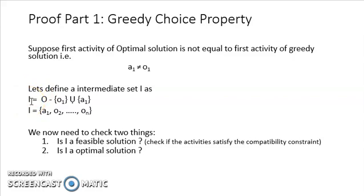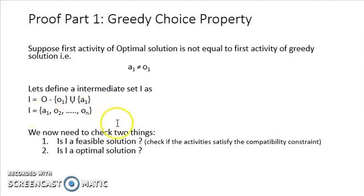We define an intermediate set I by removing O1 from the optimal solution and adding A1 in its place. So I is: A1, O2, up to ON. We need to check two things about this intermediate set I: first, whether it is a feasible solution — that is, whether it follows the compatibility constraint; and second, whether it is an optimal solution. If the answer to both questions is yes, that means A1 is part of some optimal solution, and we have proved the greedy choice property.